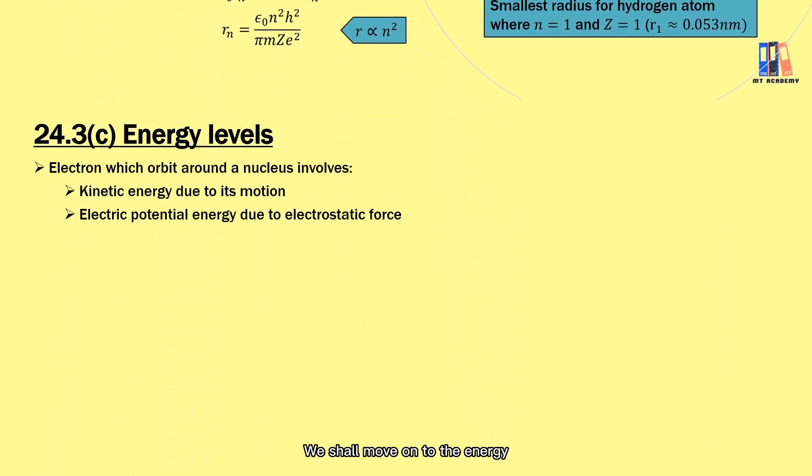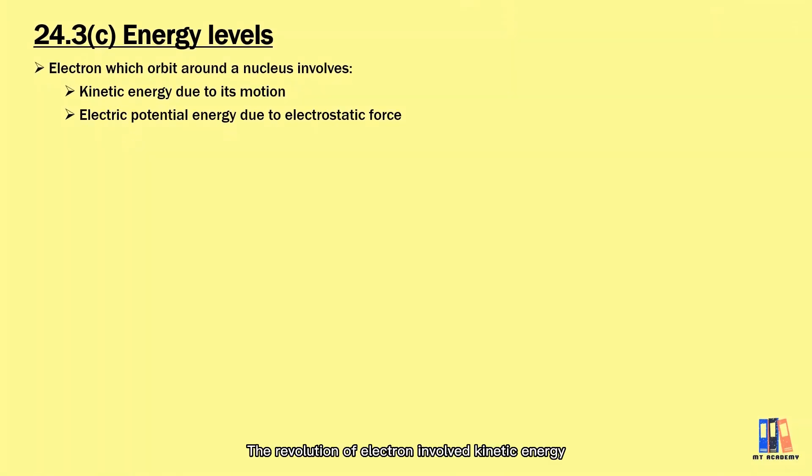We shall move on to the energy. The revolution of electron involves kinetic energy, and the attraction between the nucleus and electron gives electric potential energy. So the total energy of an electron in certain orbit is the combination of these two energies. So the kinetic energy as usual is expressed as ½mv², while U is the same as what we did just now.